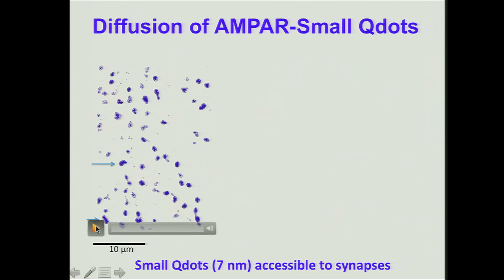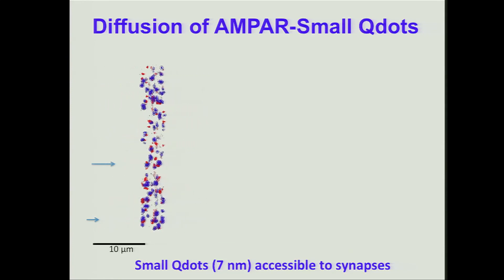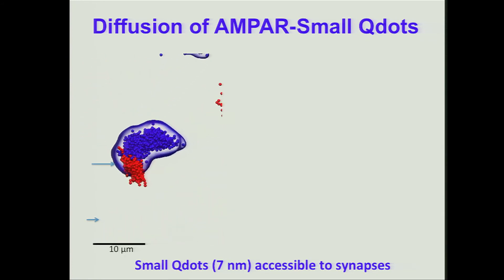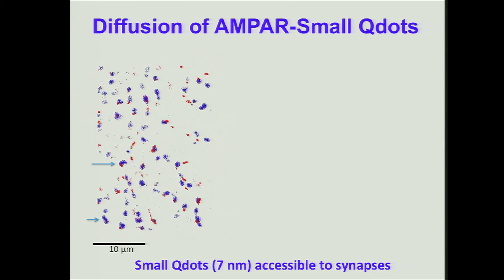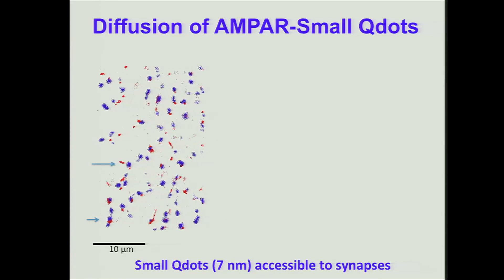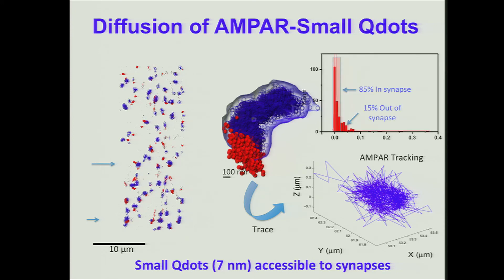Now we wanted to do it with the AMPA receptors using our small quantum dots. There's blue and then red, and we can do it in three dimensions. Zeroing in, this is now a single AMPA receptor. Notice: first, that you can see it; second, that it's actually diffusing around; and third, that the AMPA receptor is diffusing within a part of the synapse. All of this is totally new information. We find about 85% of them are within the synapse, and about 15% are extrasynaptic.